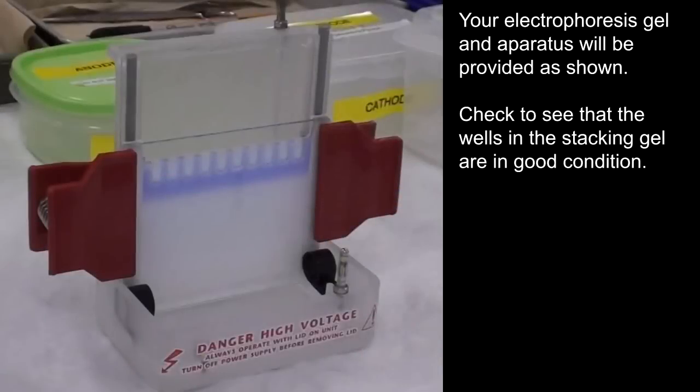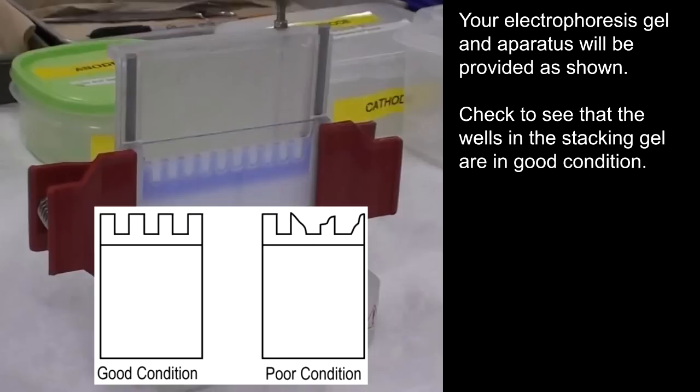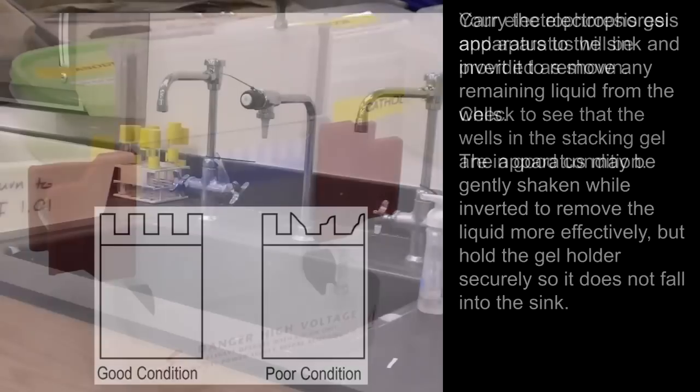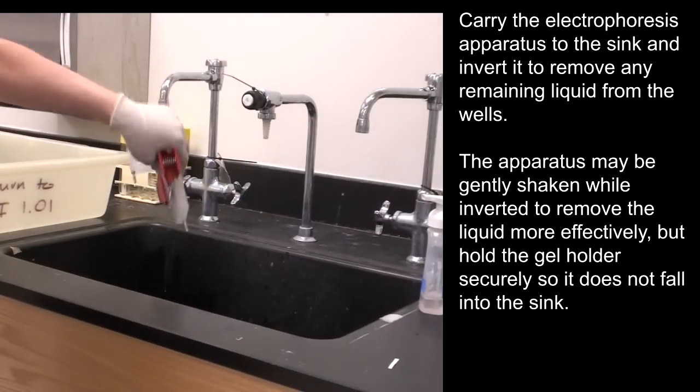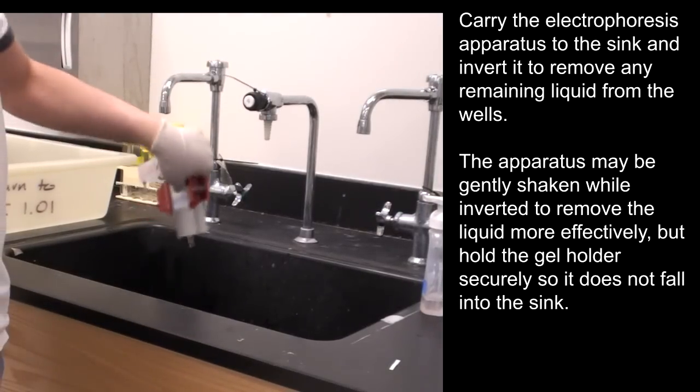Your electrophoresis gel and apparatus will be provided as shown. Check to see that the wells in the stacking gel are in good condition. Carry the electrophoresis apparatus to the sink and invert it to remove any remaining liquid from the wells.